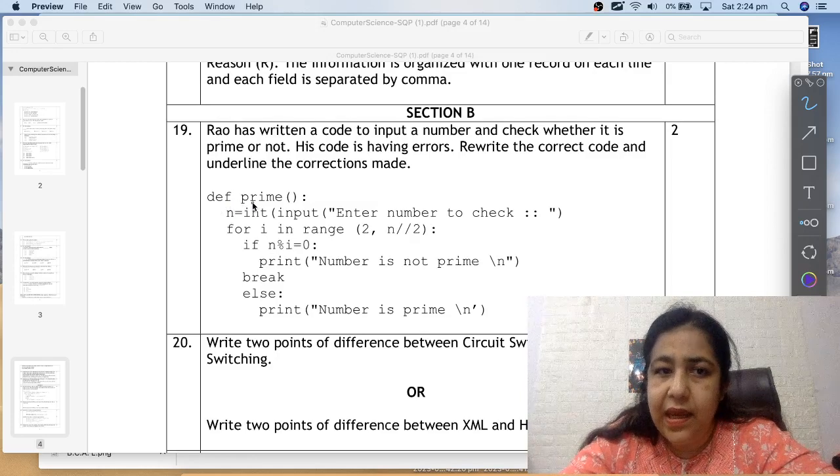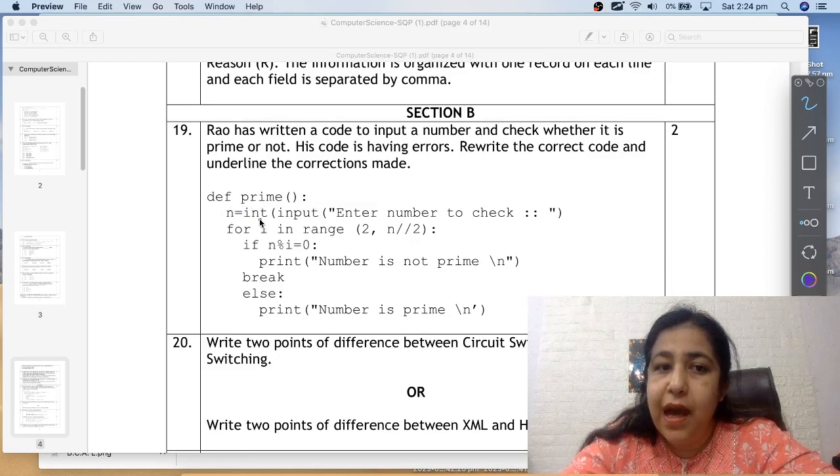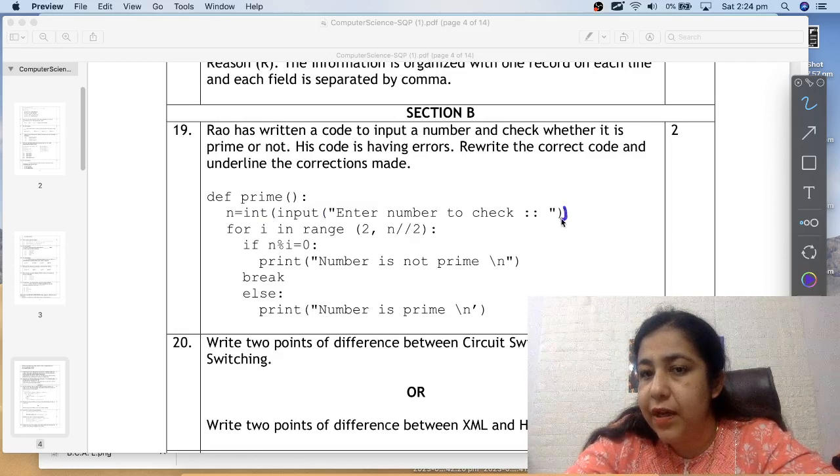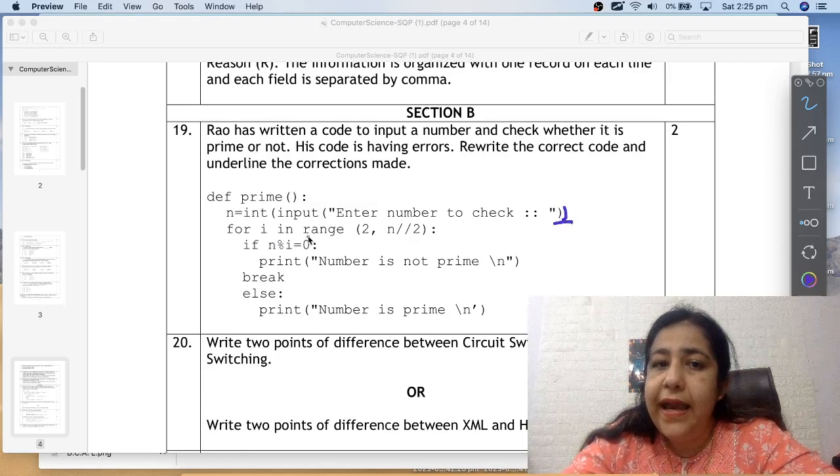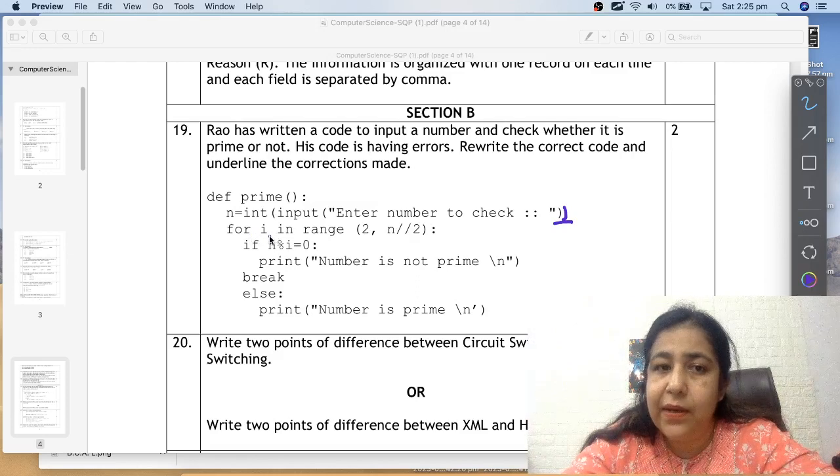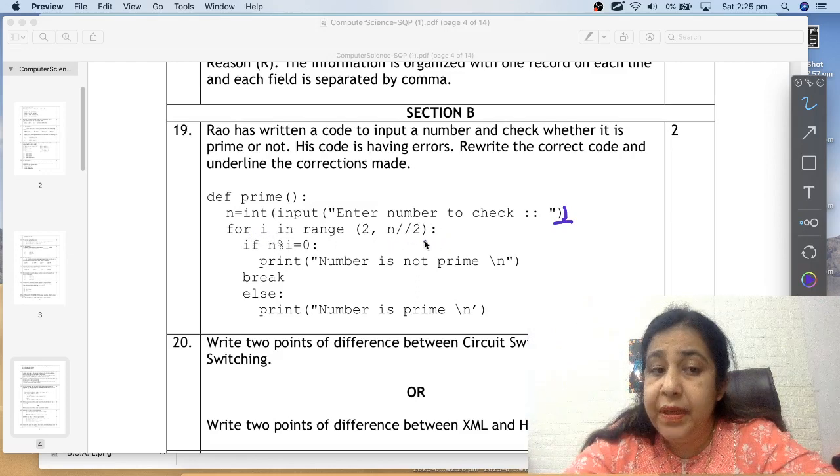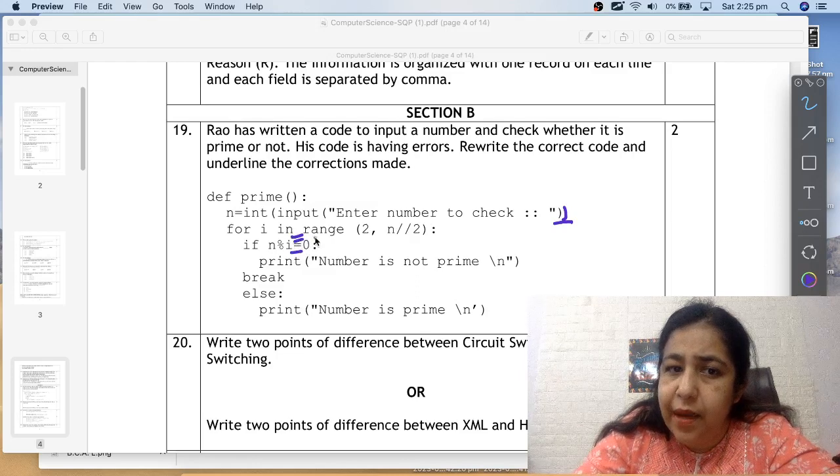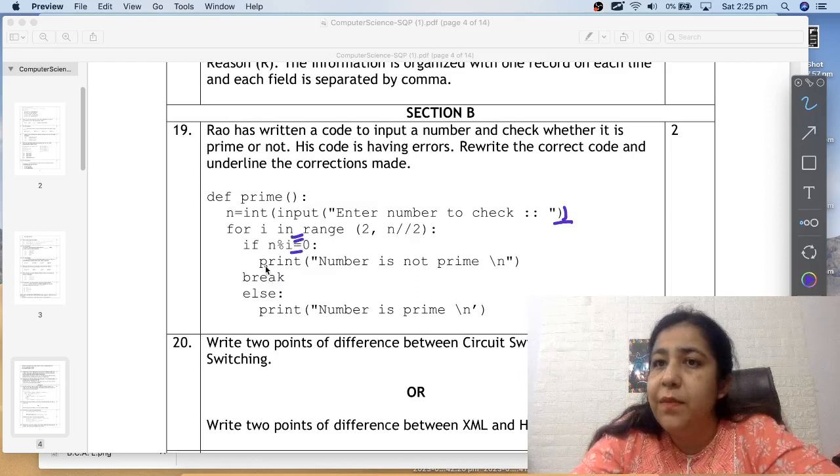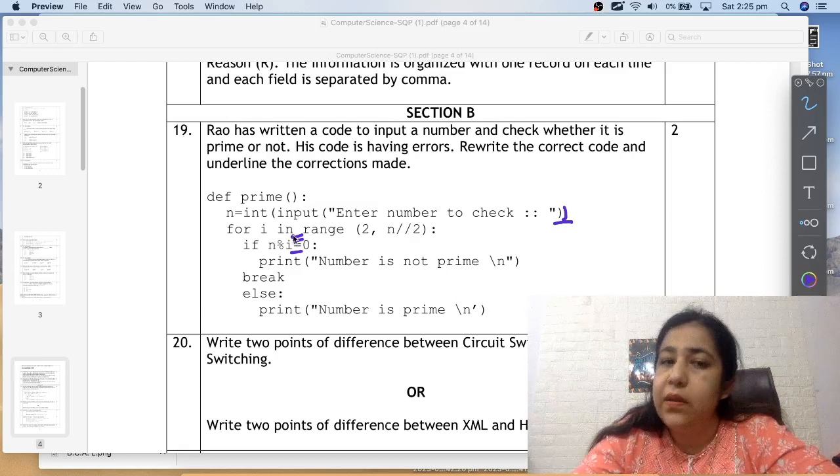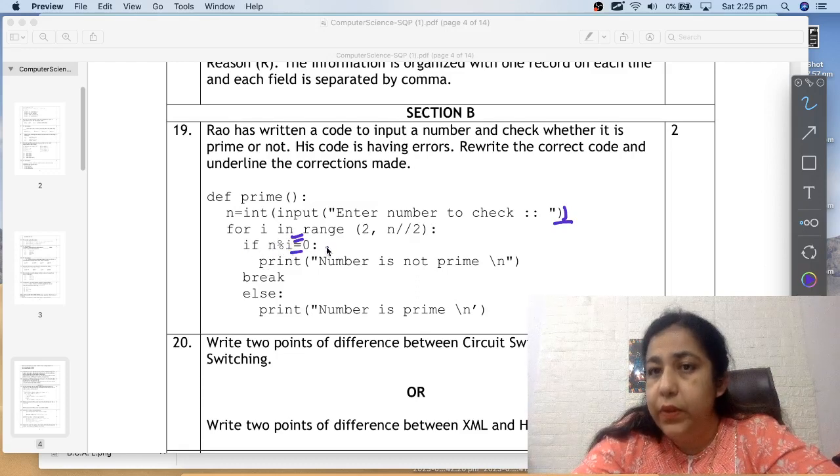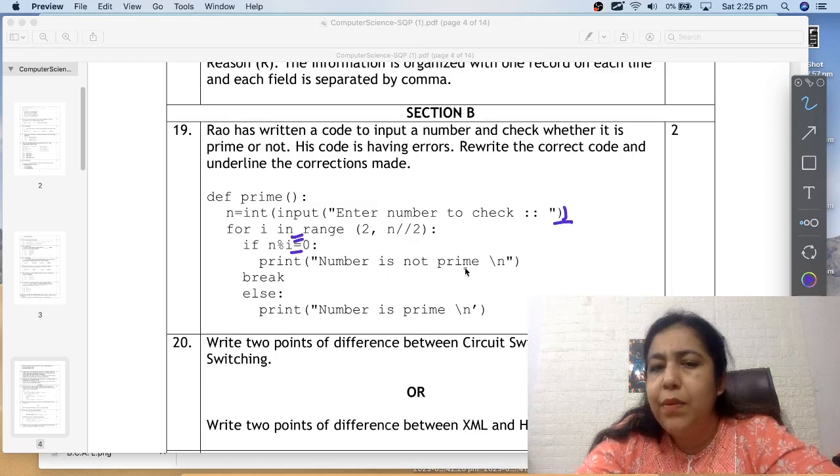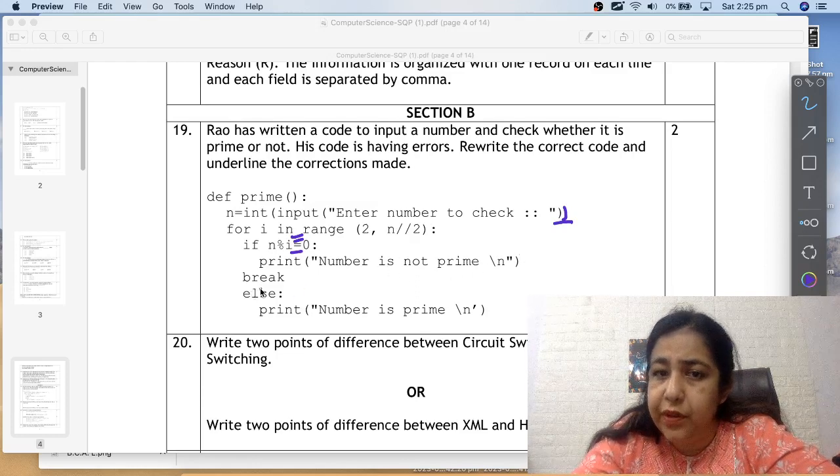You will underline where you see a syntax error, mark it with pencil, and tell what error is. After that, you will write a corrected code and underline the corrections. Here we will see that the keywords should be right, brackets and quotes should be right. So def keyword is right, name is prime, colon is also written. Now here we are doing an integer input. We have opened two brackets here, but we have not closed a bracket. So that's your first error.